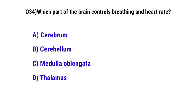Question number 34. Which part of the brain controls breathing and heart rate? The correct option is C: Medulla oblongata.